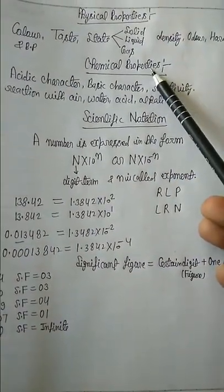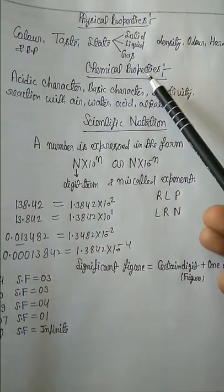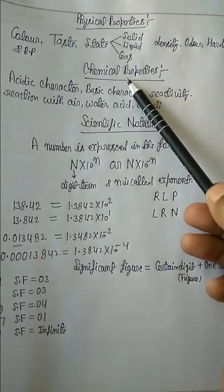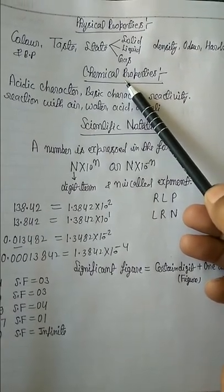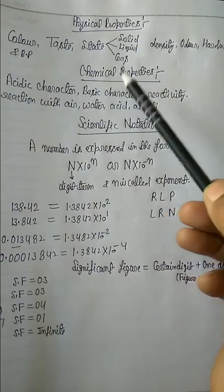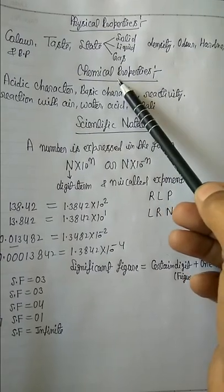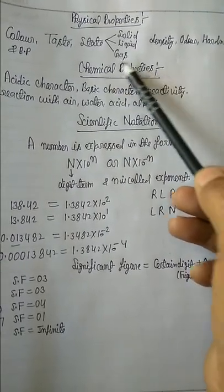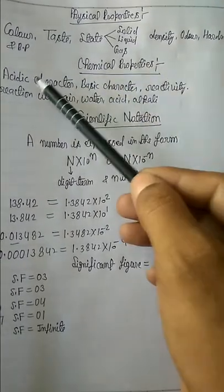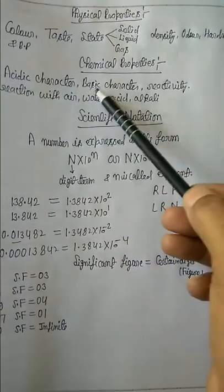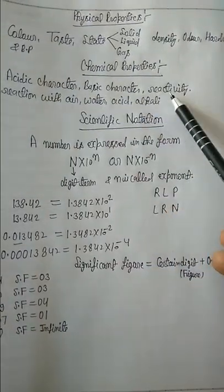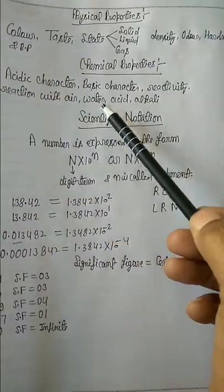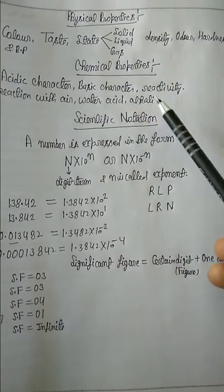Chemical properties. The properties of a substance which can be determined by changing its chemical composition are called chemical properties. Examples include acidic character, basic character, reactivity, reaction with air, water, acid, and alkali.